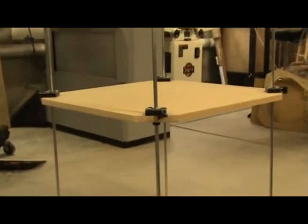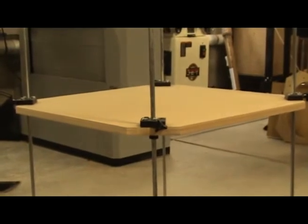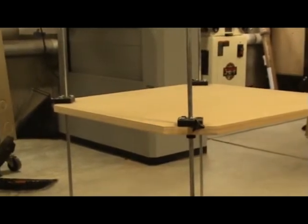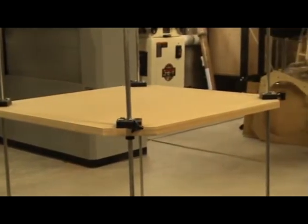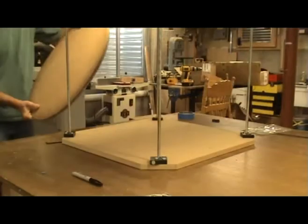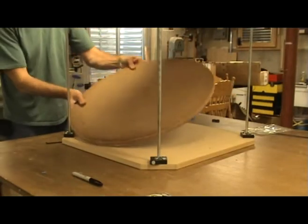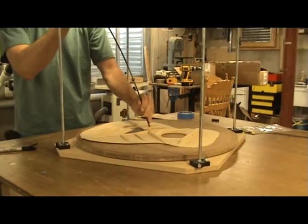You can now test the height of the upper part of the go bar deck to make sure you are applying just the right amount of pressure with the flexible go bars. I checked mine by placing a radius dish in the go bar deck and then a top with braces.